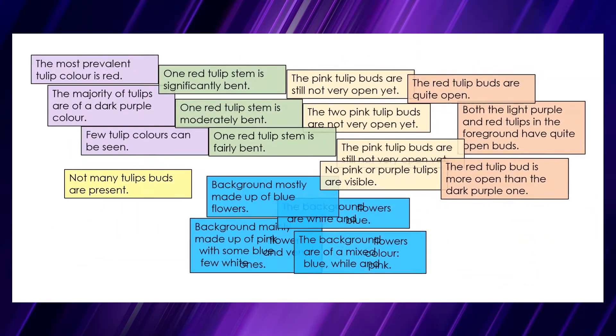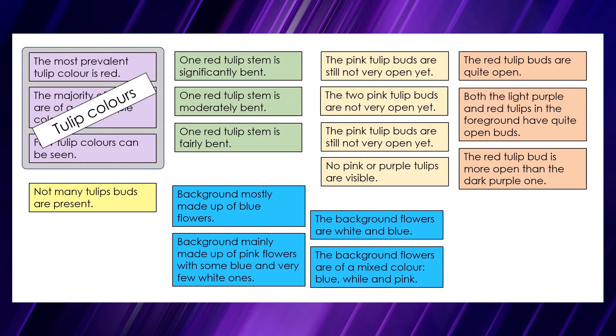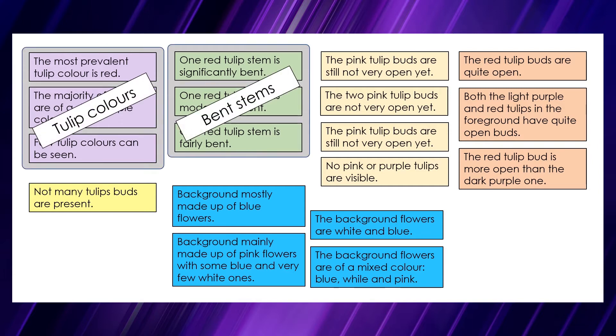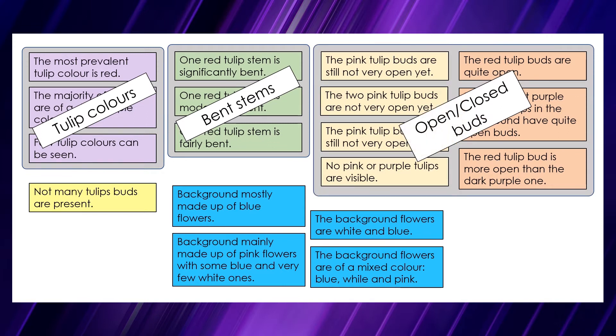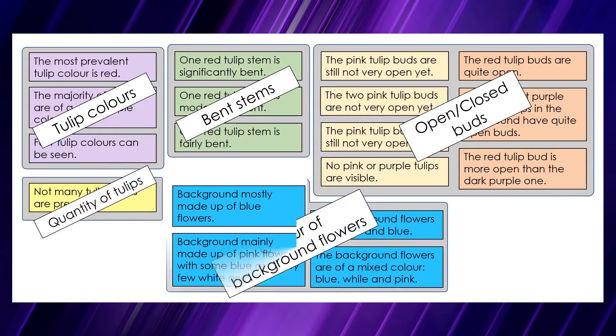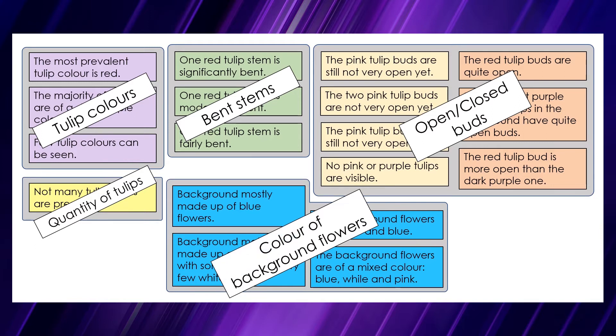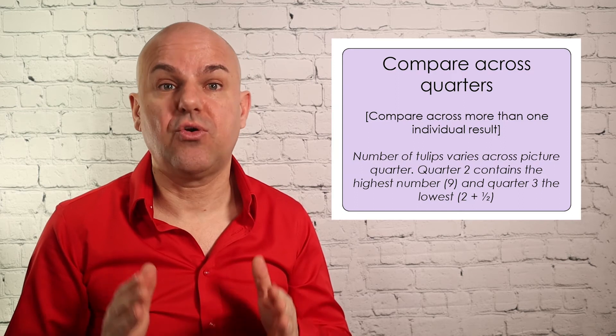We have four quarters of a flower patch and we made observations about each of those quarters, so we can now bring together similar themes. We commented on tulip colors, on how bent the stems are, how open or closed the buds are, the quantity of tulips, and the color of background flowers. These are themes we can now draw conclusions about because we have the entire picture. When you do global analysis, you should perform two tasks, and the first one is to compare across quarters.